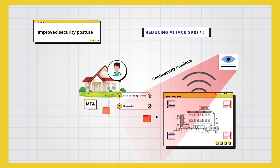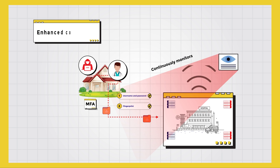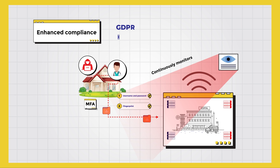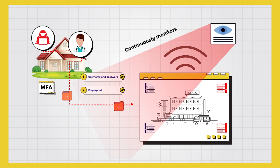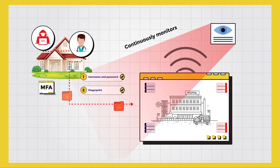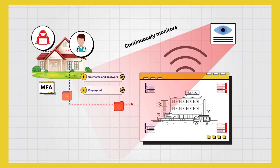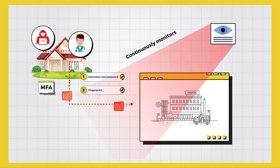ZTS helps organizations improve their overall security posture by reducing the attack surface and making it more difficult for attackers to access sensitive data and systems. It also provides enhanced compliance, helping organizations meet industry regulations such as GDPR and HIPAA. Furthermore, ZTS can help organizations become more agile and responsive to change, as it is designed to be flexible, scalable, and adaptable to meet the specific needs of any organization.